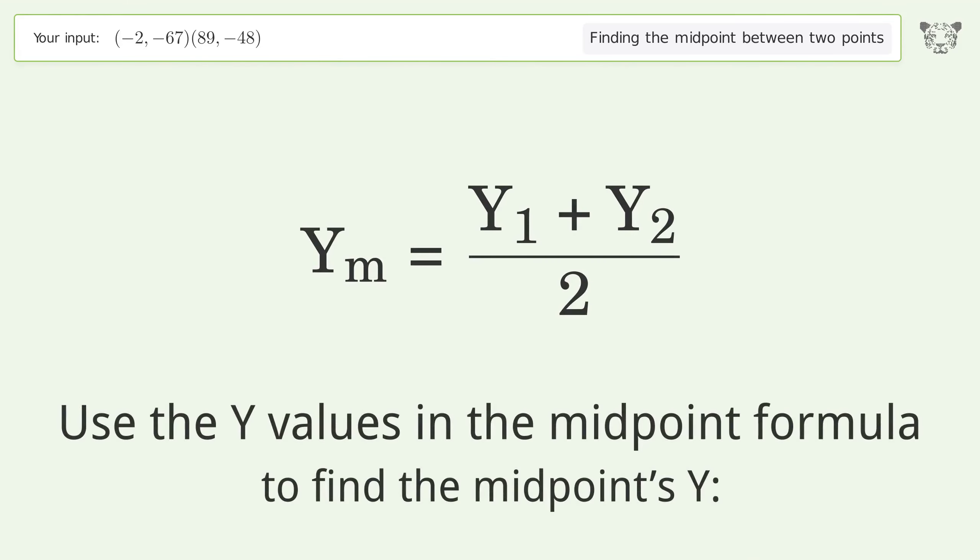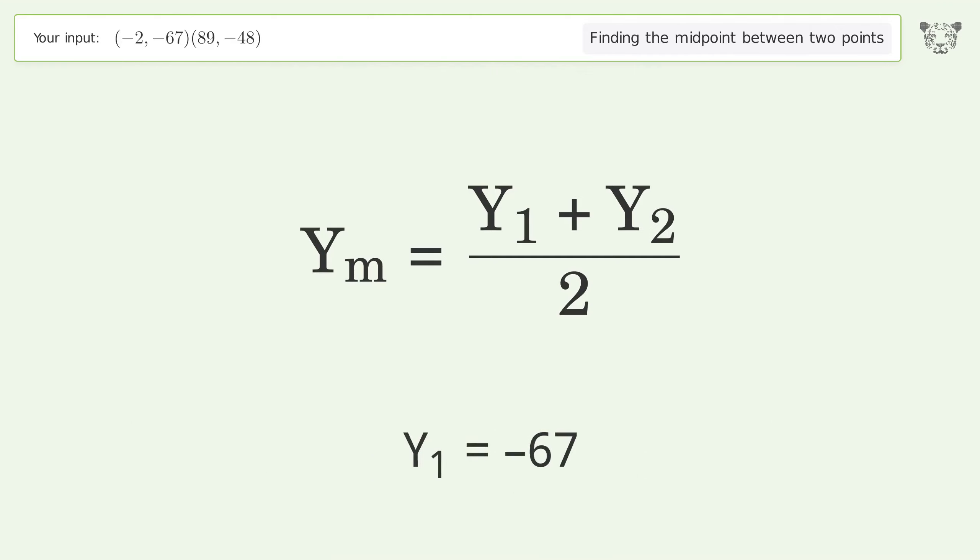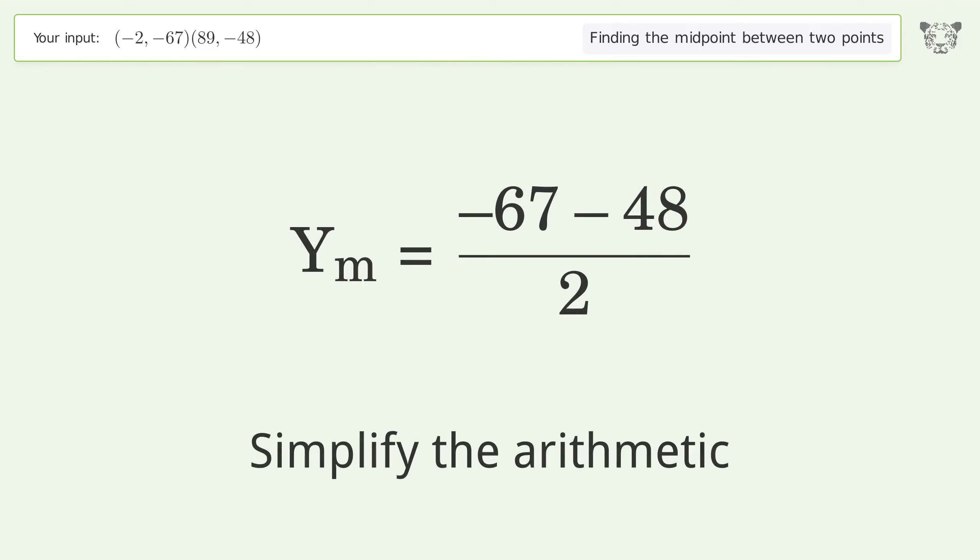Use the y values in the midpoint formula to find the midpoint's y-coordinate. y₁ = -67, y₂ = -48. Simplify the arithmetic.